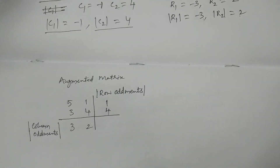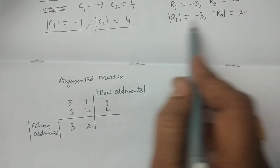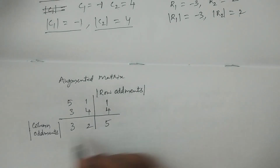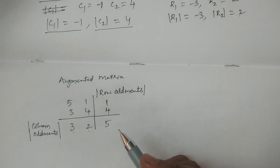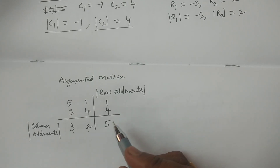This augmented matrix will determine the solution. The row oddments total: modulus of row oddments added — |−1| + |4| = 1 + 4 = 5. The column oddments total: |−3| + |2| = 3 + 2 = 5. Since the sum of modulus of row oddments equals the sum of modulus of column oddments, the method is valid.